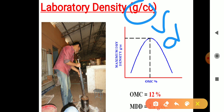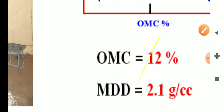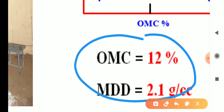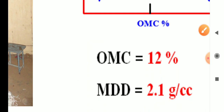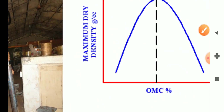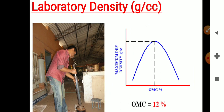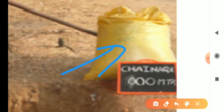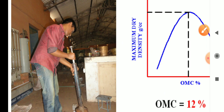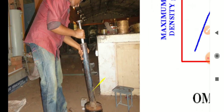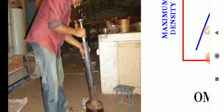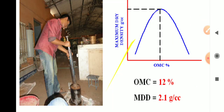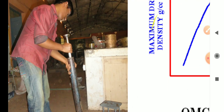We use dry density (gamma-d) rather than bulk density because the collected soil sample is placed in an oven at 105 to 107 degrees centigrade. This evaporates all the water from the soil, giving us dry soil. We then conduct the compaction test on this dry soil.